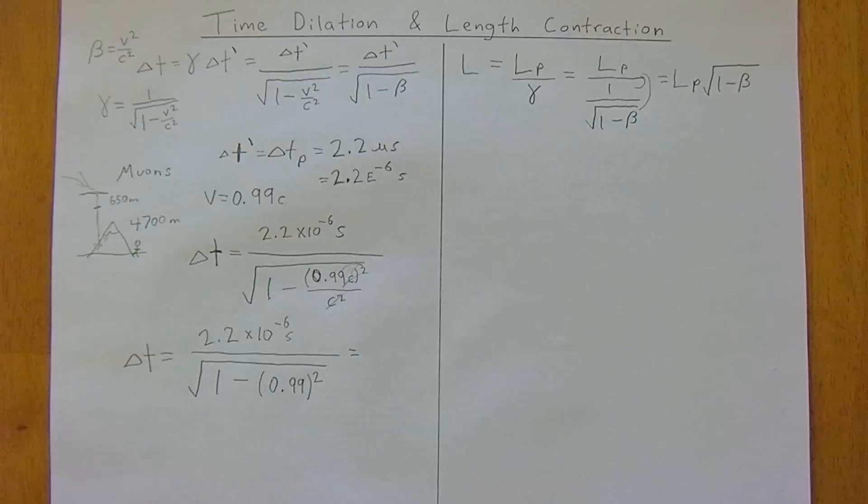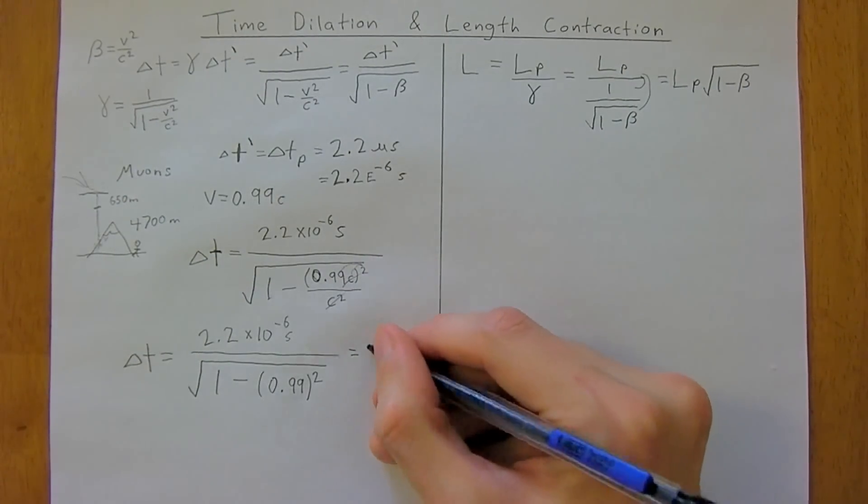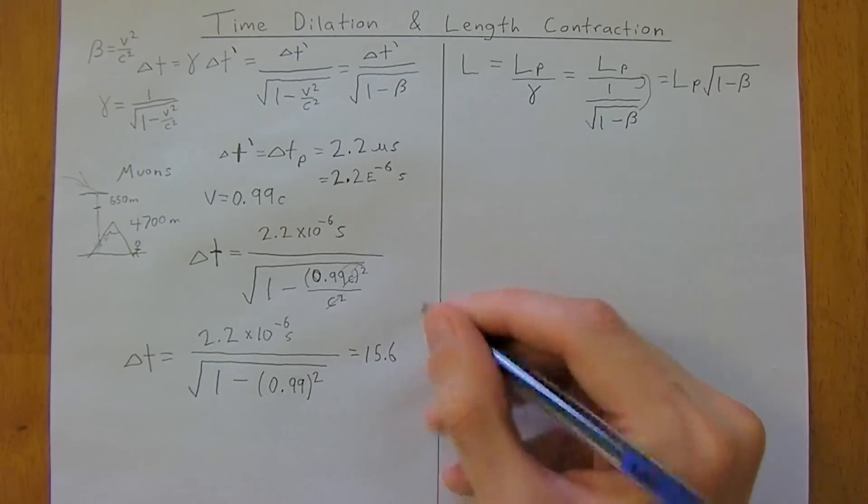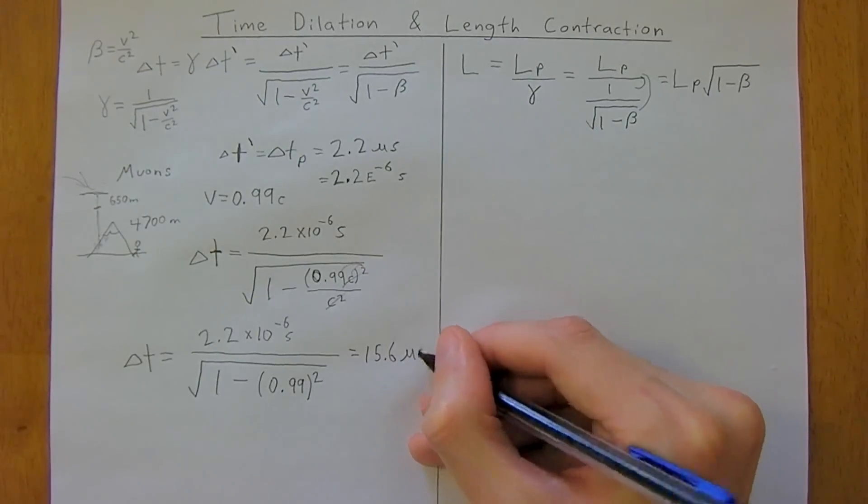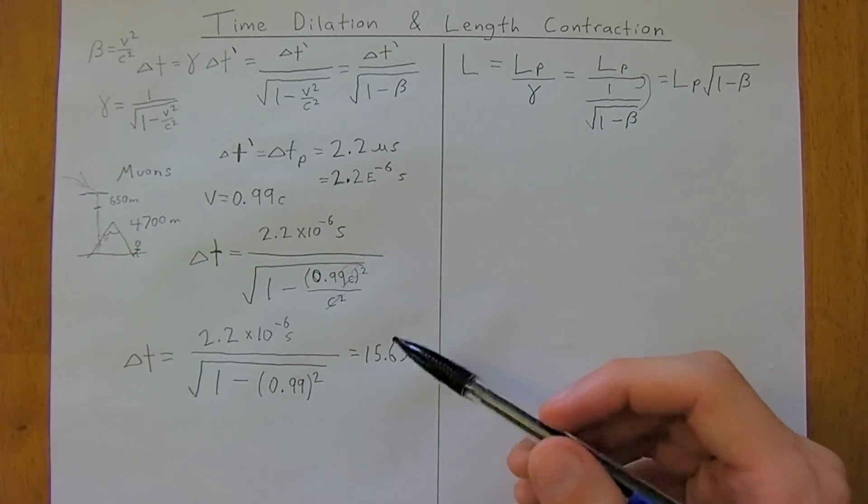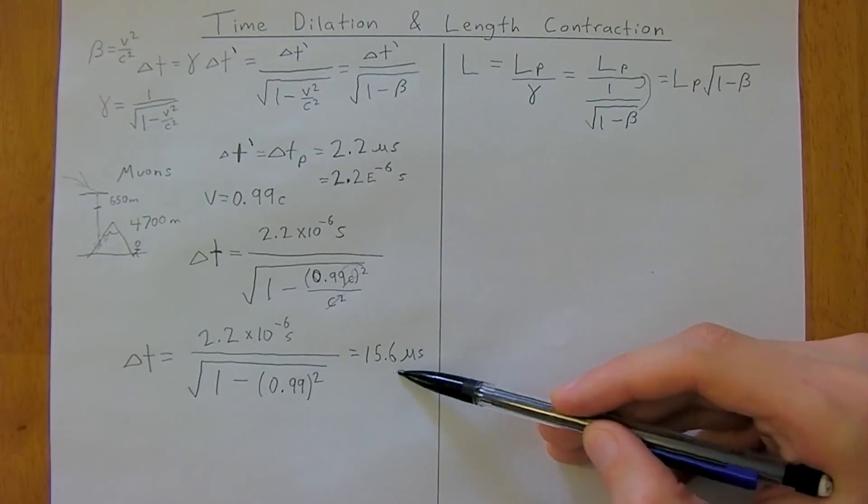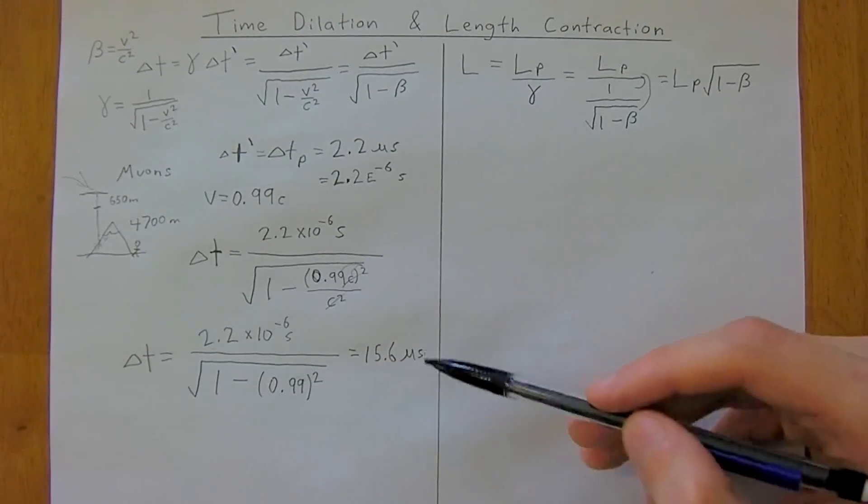and we get 15.6 microseconds. So, from Earth, we actually see the muons, they have a lifetime of 15.6 microseconds.